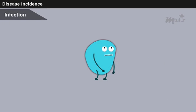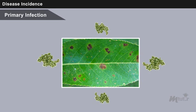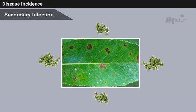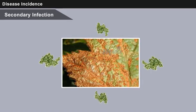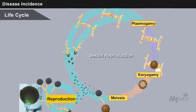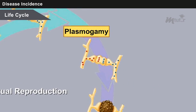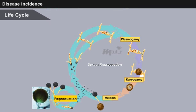Infection is the establishment of a parasite on or within a host cell or tissue. Primary infection is the first infection of a plant by the pathogen. Secondary infection is any infection caused by the inoculum produced as a result of a primary or subsequent infection. The life cycle of an infectious disease is the sequence of distinct events, such as sexual reproduction, occurring between the appearance and reappearance of the causal organism.